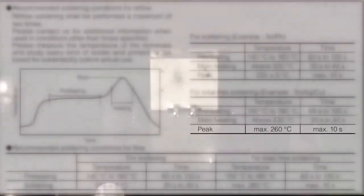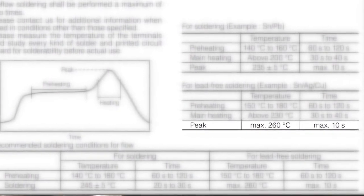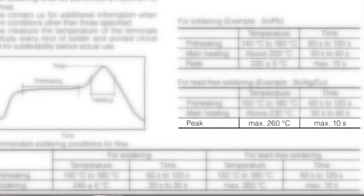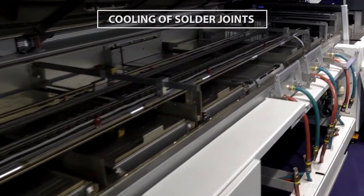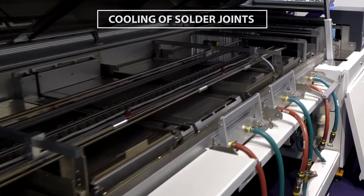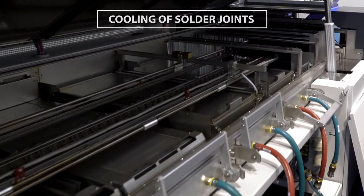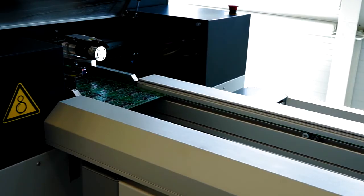The component that has the lowest maximum temperature allowance will define the maximum allowable temperature. The process board is cooling down in the last zones of the reflow oven. The solder alloy solidifies to make the solder joints.